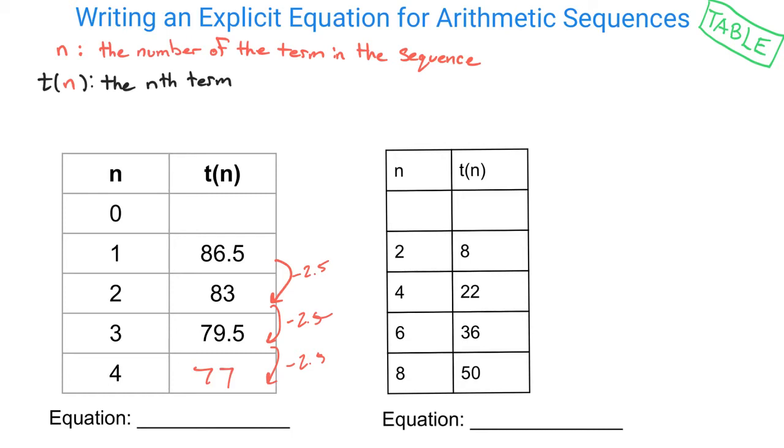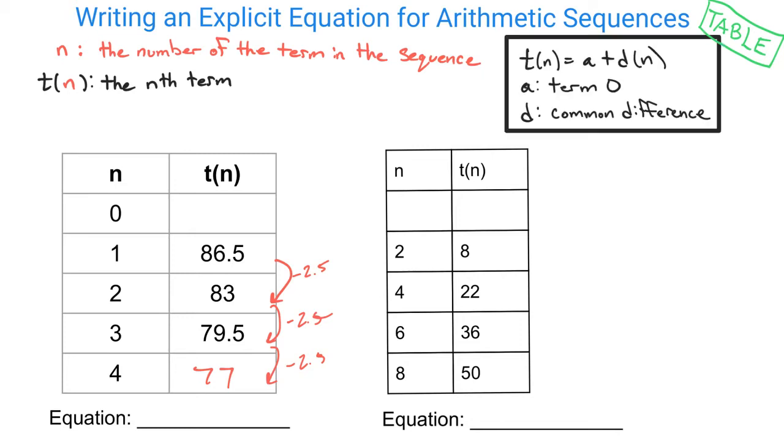So when you're writing out what your equation is, we use this general formula, which is t(n) = a, which is our term 0, plus d, which is the common difference times n, where n is the number of the term in the sequence. So a + d times n. So our common difference here is how your sequences are changing from one term to the next. So that in this scenario would be negative 2.5.